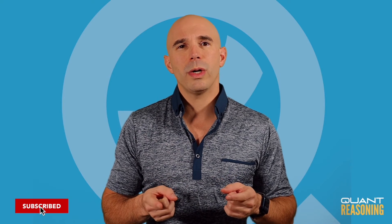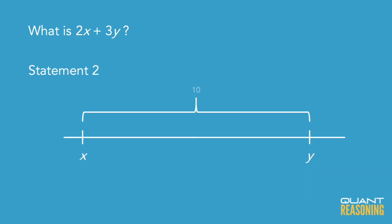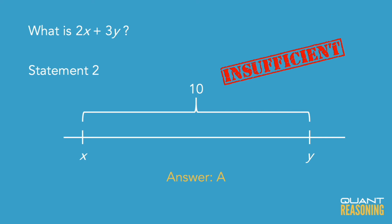Statement 2 gives us some kind of relationship between x and y, but it doesn't tell us what 2x plus 3y would be. It just tells us how far apart x and y are on the number line, without any indication of where they actually are. All we can say is that y sits 10 units to the right of x, but the actual values of x, y, or the sum 2x plus 3y are impossible to infer. Therefore, the correct answer is A.